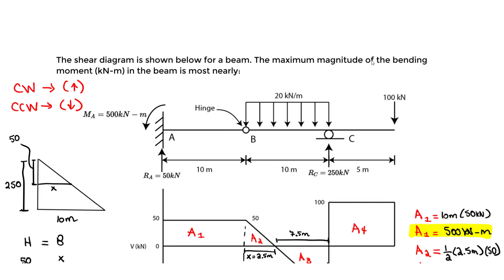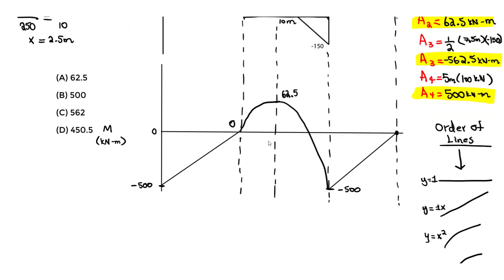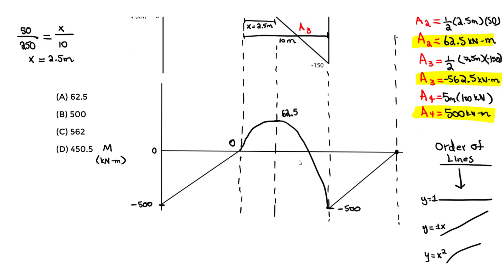Now let's extract what the question actually wants: the maximum magnitude of the bending moment. Looking at the moment diagram, the maximum magnitude is 500 kilonewton-meters — it occurs as a negative bending moment. The question asks for maximum magnitude, so the answer is 500 kilonewton-meters (negative bending moment). The answer is B. That's it — thank you.